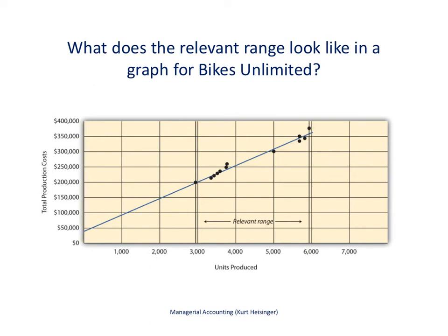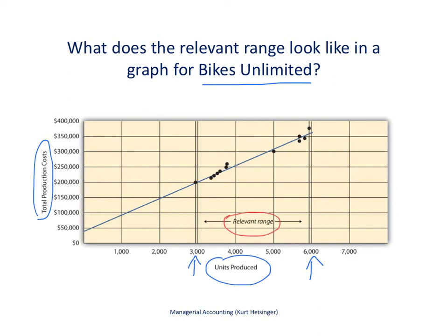Here's an example in the form of a graph of the relevant range, using an example I've used throughout several videos talking about estimating costs — in particular total fixed costs and variable cost per unit. What you see here are 12 different monthly data points related to total production costs and units produced. These 12 data points range from slightly under 3,000 units to around 6,000 units, so we will call that the relevant range. This tells us that if we are looking into the future and trying to estimate costs, we want to try to be fairly close to this range.